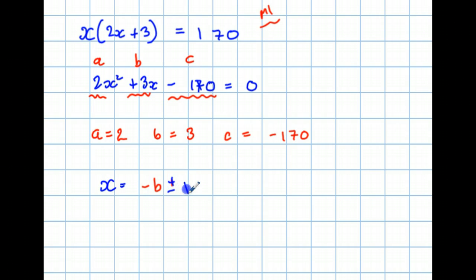So, x is equal to minus B plus or minus the square root of B squared minus 4AC. AC being A times C all over 2 times A.